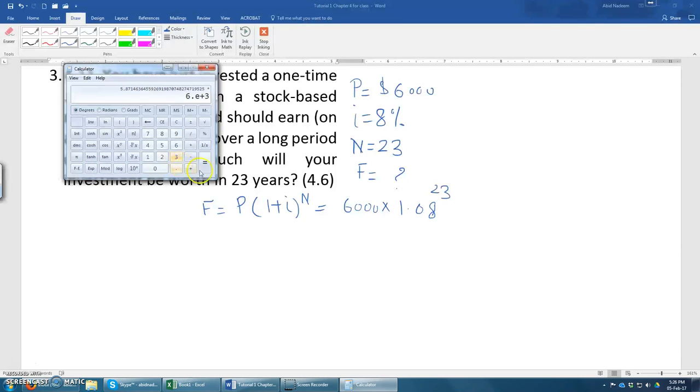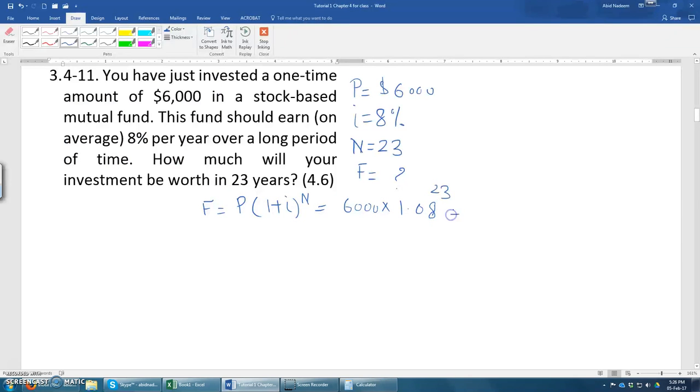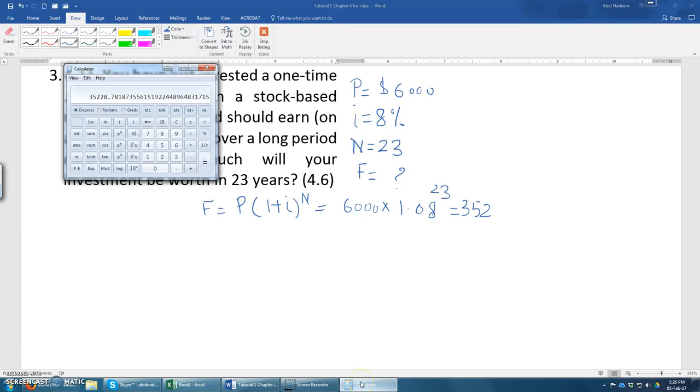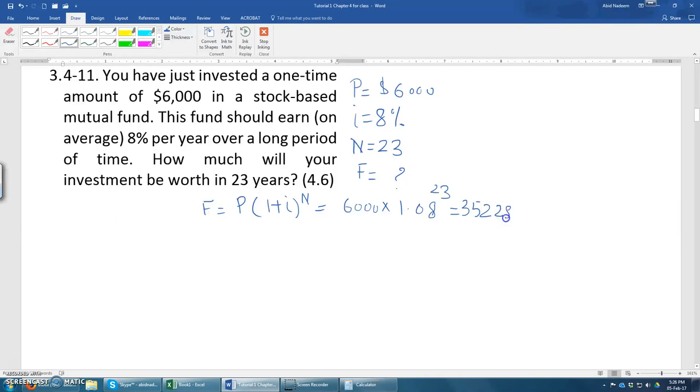6,000, so which makes it $35,228.78 in dollars. So you will accumulate $35,228.78 in 23 years from an initial amount of $6,000.